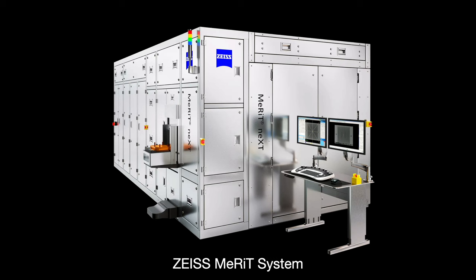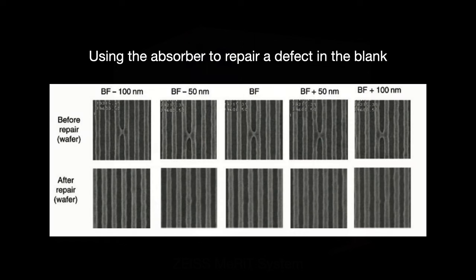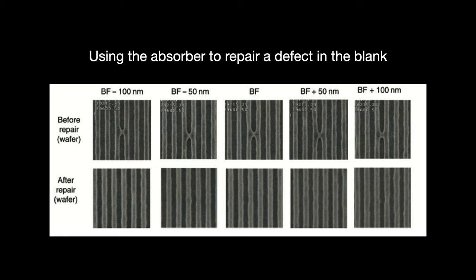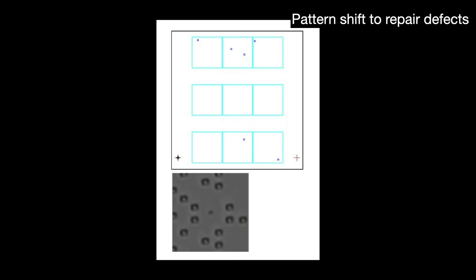And finally, one last thing you can try is mitigation. Defects on the blank interfere with reflectivity. So why not make it so that reflection does not matter? Reposition the chip design in such a way that you put the absorber layer right on top of the defect. This is called pattern shift and it works. But special EDA software is needed to pull it off as well as knowledge of the defect's exact shape and nature. But again, that is possible thanks to actinic blank inspection.